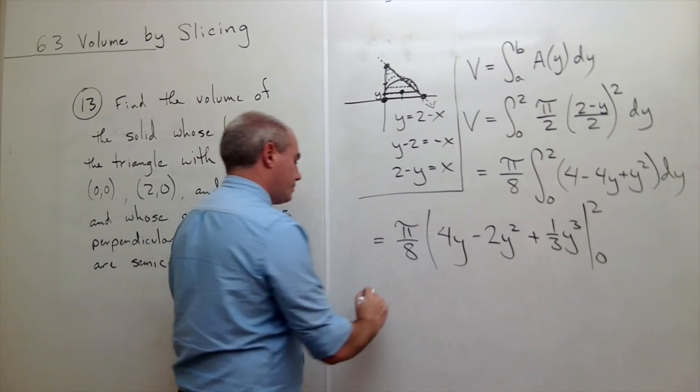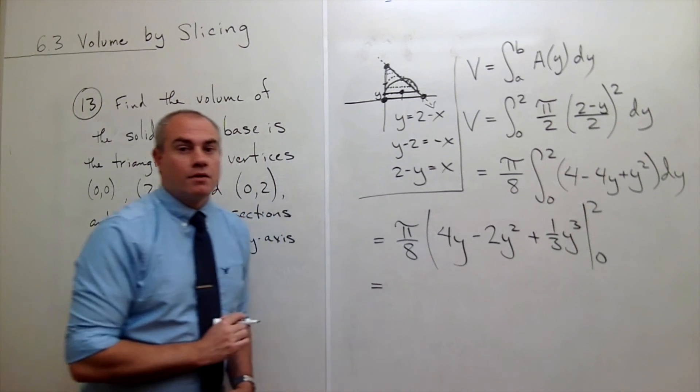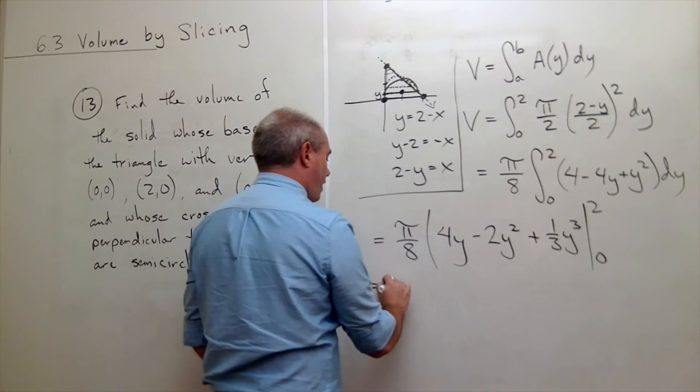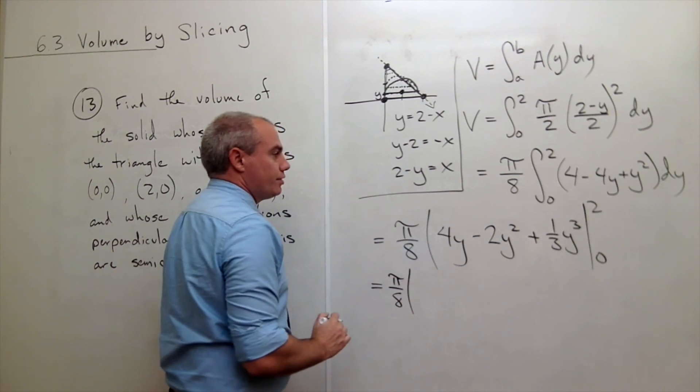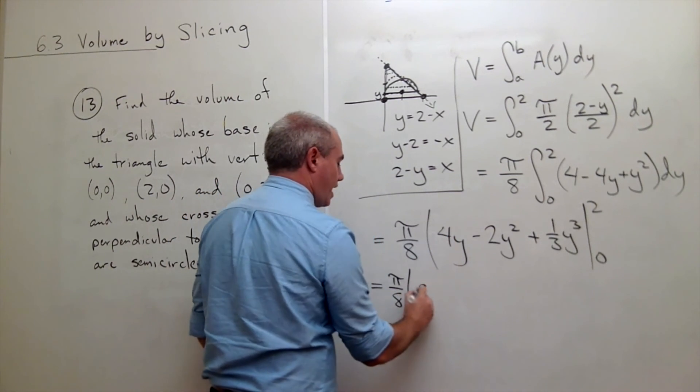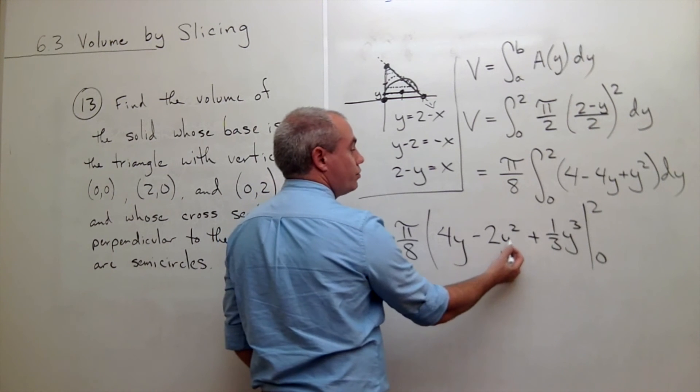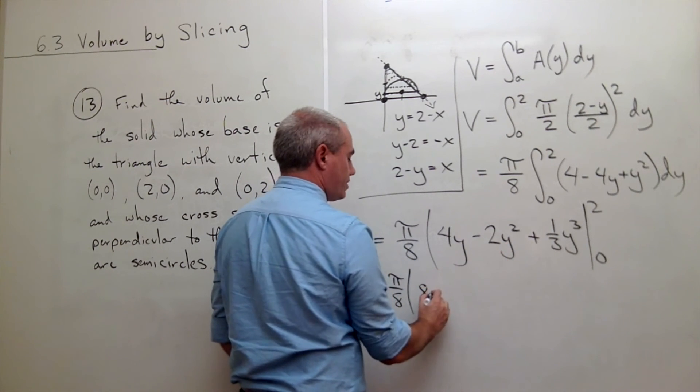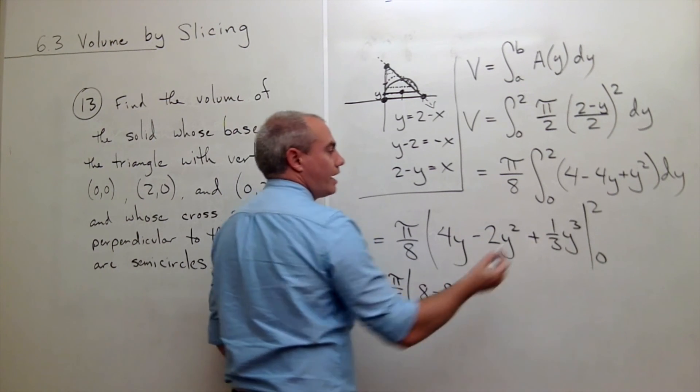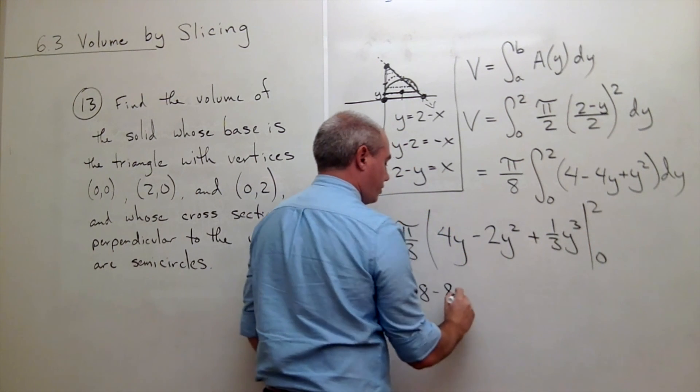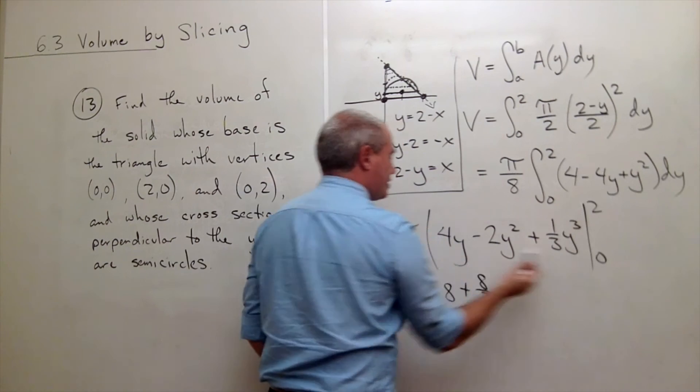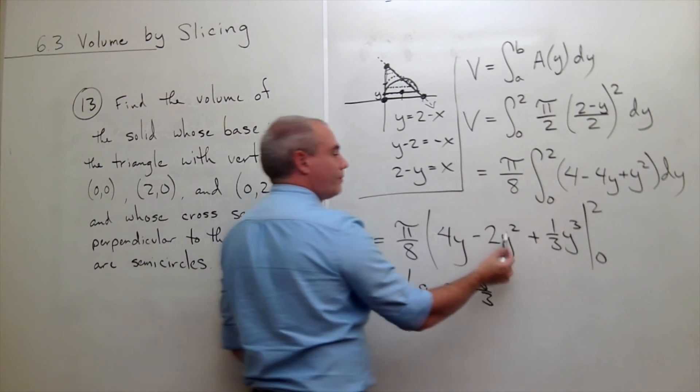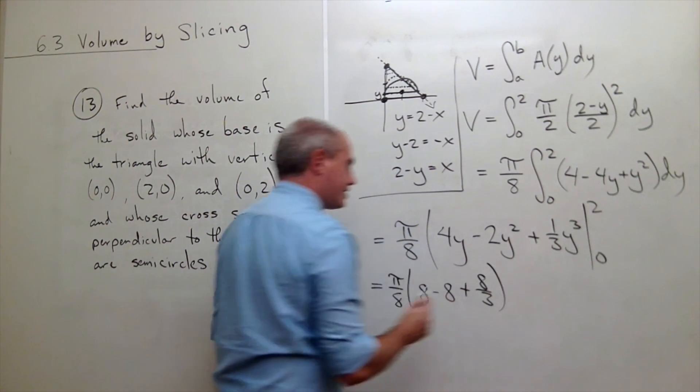All right let's plug things in. When I plug things in I still have my π over 8 sitting out here. When I plug in 2 I get 2 times 4 is 8. Two squared is 4 times 2 is minus 8. And 2³ is 8 over 3 plus 8 over 3. And then I plug in zero for everything and I get zero minus zero plus zero. So that's it.